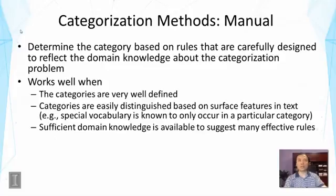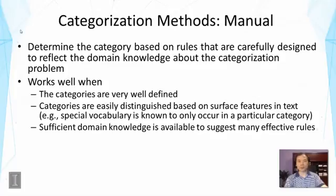Such a strategy works well if the following conditions hold. First, the categories must be very well defined, which allows a person to clearly decide the category based on clear rules. Secondly, the categories have to be easily distinguished based on surface features in text — that means superficial features like keywords, punctuation, or whatever you can easily identify in text data. For example, if there is special vocabulary known to occur only in a particular category, that would be most effective.